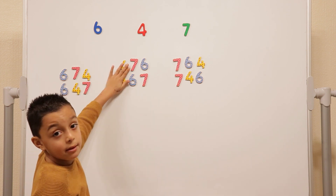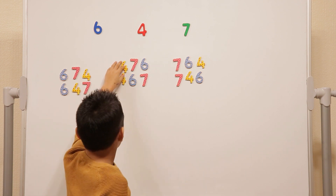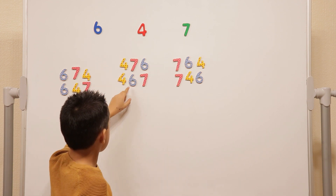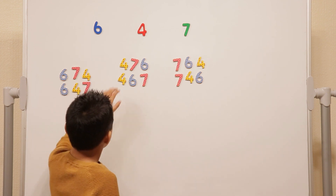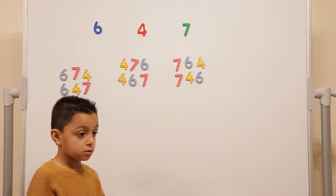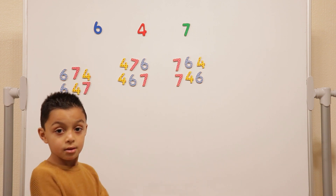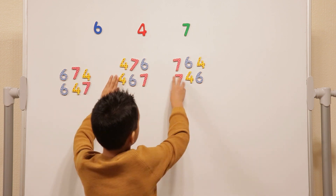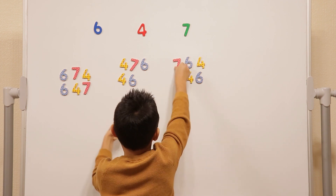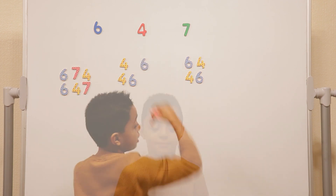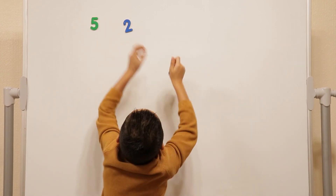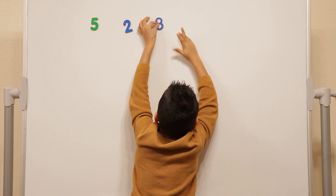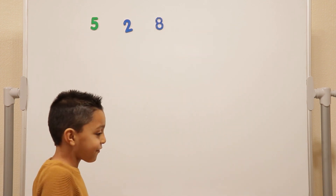Using that same idea, which number would be the smallest one? The one in the four hundreds, because four is the smallest number. And then six hundred and sixty-seven because six is smaller than seven — so four hundred and sixty-seven. Now take all of those numbers off the board and make a new number at the top: five, two, and eight. Now we're going to put them in order from the smallest.